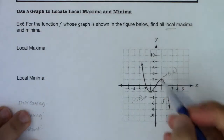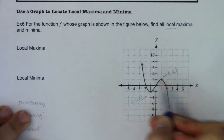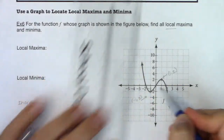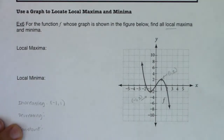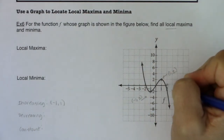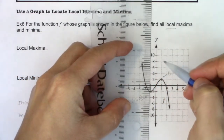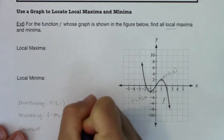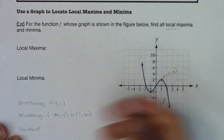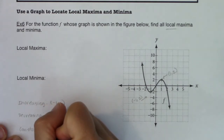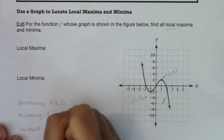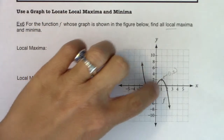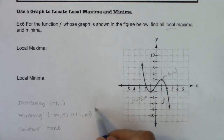I'm increasing up to the high point, which looks like the ordered pair one, two. Be careful — the x-axis and y-axis have different scales: in the x direction each square represents one unit, and in the y direction each square represents two. So looking only at x values, I'm increasing from negative one to positive one. I'm decreasing on the two other intervals: from negative infinity to negative one, and from one to infinity. There are no constant intervals — no horizontal portion on the graph.